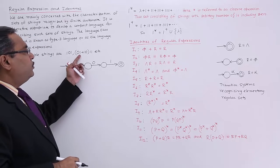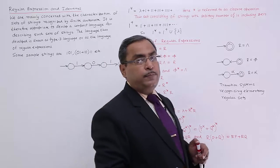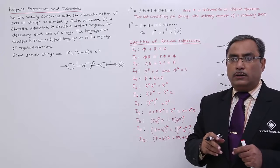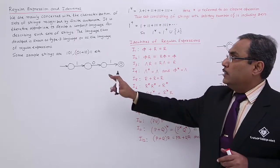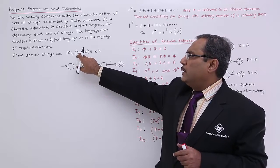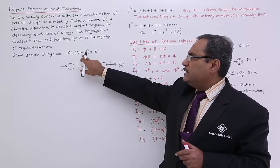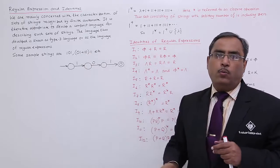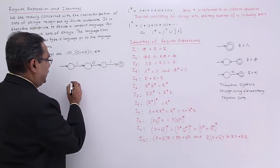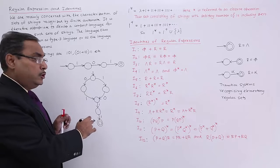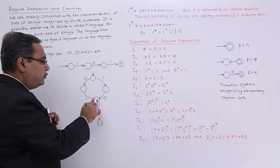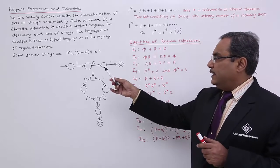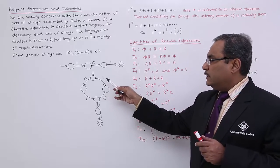Now, what about this one? We are having the string 0,1 plus 1,0,1,1. This is one type of string consisting of 0s and 1s. Let us try to draw one automaton for it. You see, 0,1 means first 0 then 1, and this plus indicates 'or' — otherwise 1,0, and then it will be followed by 1,1. The corresponding automaton can be drawn accordingly. So either 0,1 or 1,0 followed by 1,1. Against this particular set of strings consisting of 0s and 1s, I have drawn the respective finite state transition systems.